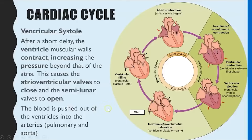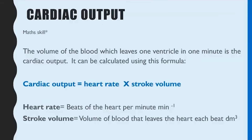Cardiac output is a maths skill linked to the cardiac cycle. It tells you the volume of blood leaving one ventricle in one minute. The formula is: cardiac output = heart rate × stroke volume. Heart rate is how many times your heart beats per minute, and stroke volume is the volume of blood leaving the heart with each beat.